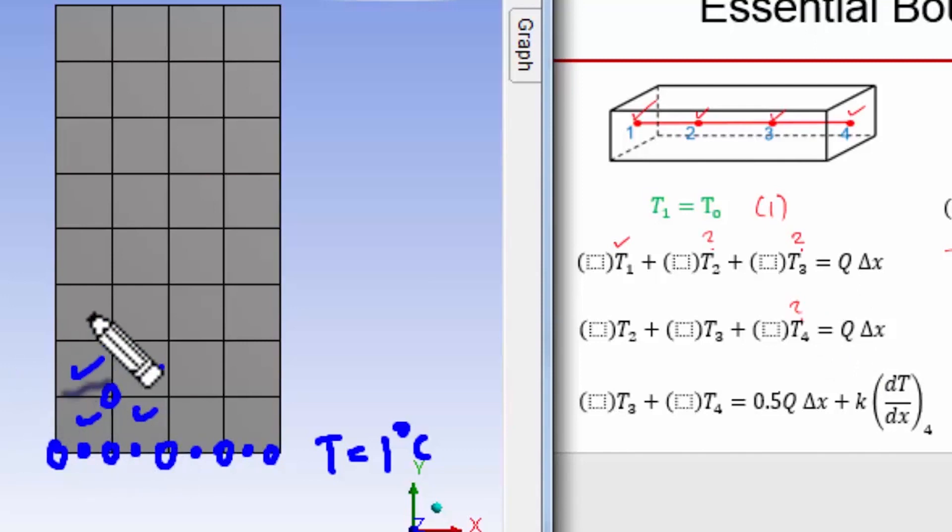If you think about a node at the insulated boundary over here, for that node the right-hand side is going to come from the heat generation, which is zero, and then from the heat flux at the boundary. In the 2D case this is the derivative in the normal direction, and again that's zero. So for these nodes, the right-hand side is zero.